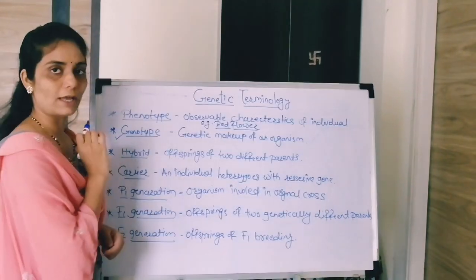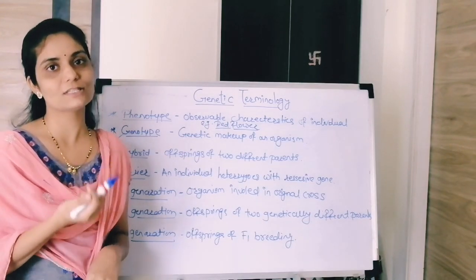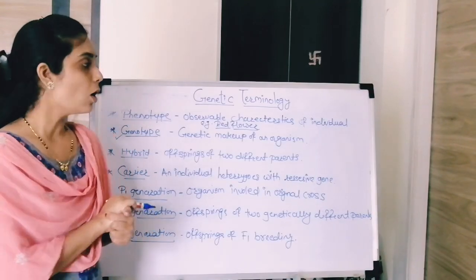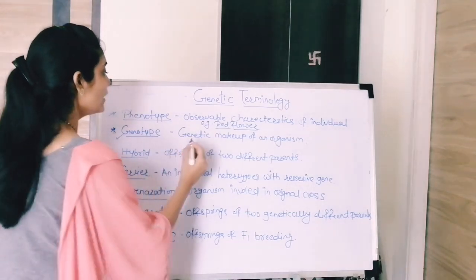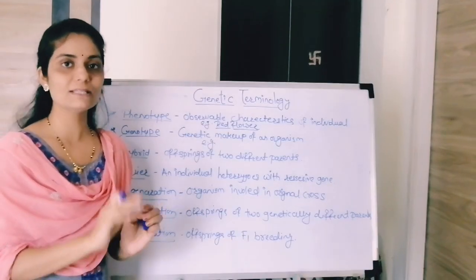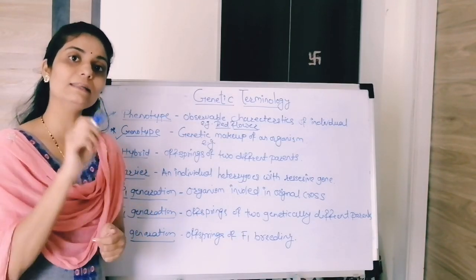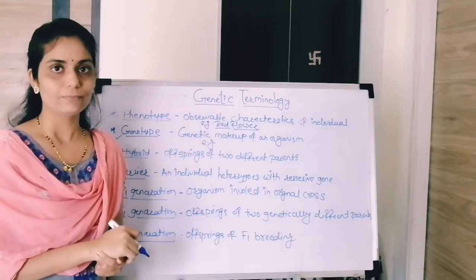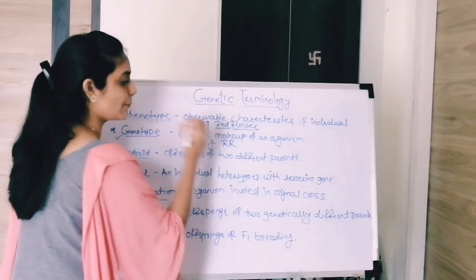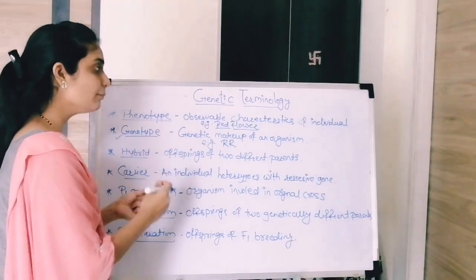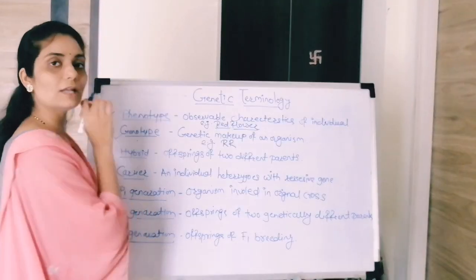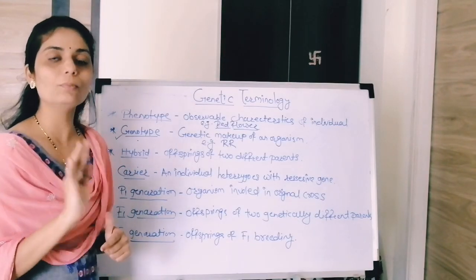Next is genotype. Genotype is the genetic makeup of a particular organism. For example, a red colored flower is the phenotype, but the genetic makeup of that red flower is called the genotype. If you see the genotype of the red flower, you will write capital R capital R, because the genetic makeup of the red colored flower is RR. That is the genotype of the red colored flower.